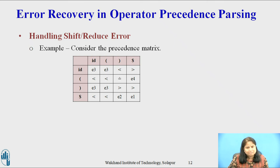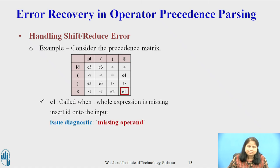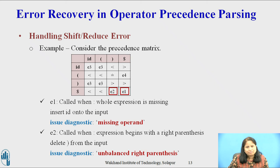For example, consider the precedence matrix. In this table, we show the rows and columns of the matrix that have one or more blank entries, and we have filled in these blanks with the names of the error handling routines. E1 is called when the whole expression is missing, so insert ID onto the input and issue the diagnostic 'missing operand'. E2 is called when the expression begins with a right parenthesis, so delete the right parenthesis from the input and issue the diagnostic 'unbalanced right parenthesis'.